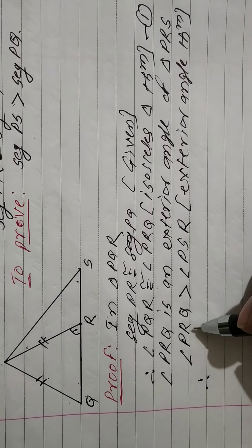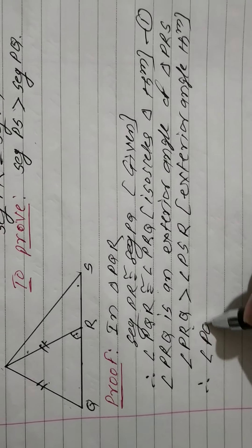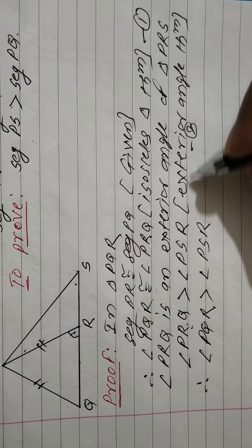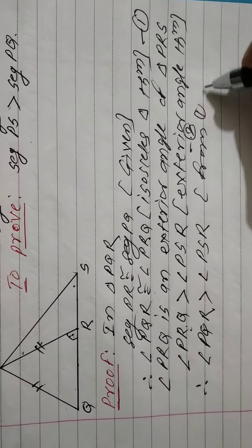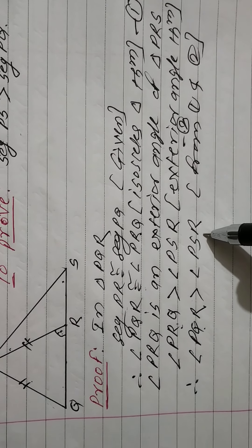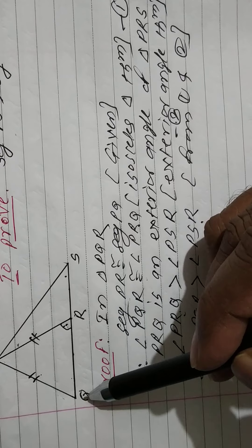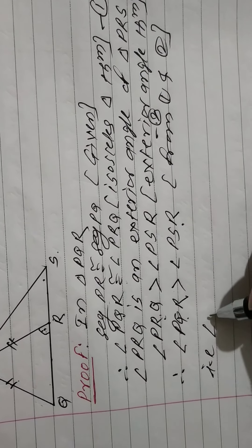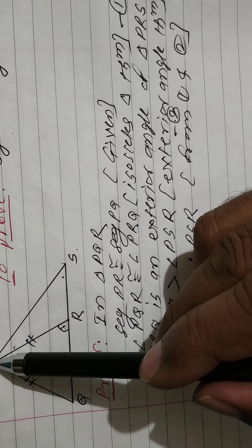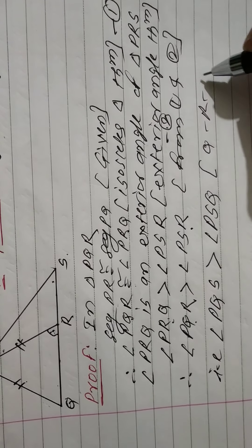Therefore, instead of angle PRQ, since angle PQR and angle PRQ are equal from statement 1, I write: angle PQR is greater than angle PSR. From statements 1 and 2, angle PQS is greater than angle PSR, which we can also write as angle PSQ, by the betweenness of ray QS.